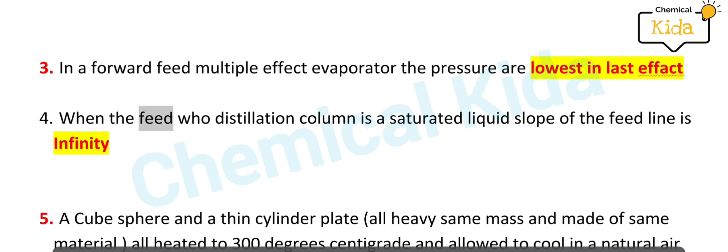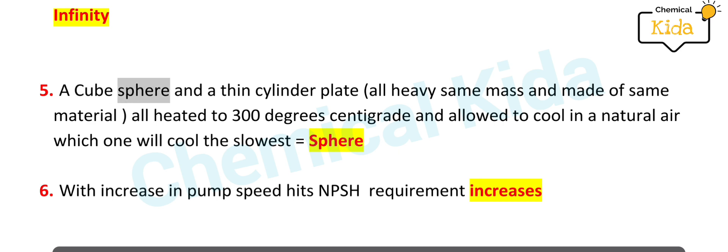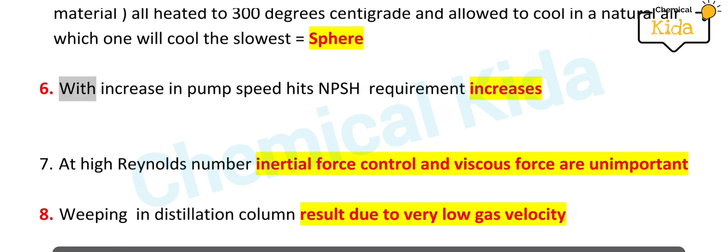When the feed to distillation column is a saturated liquid, slope of the feed line is infinity. A cube, sphere, and a thin cylinder plate, all having same mass and made of same material, all heated to 300 degrees centigrade and allowed to cool in natural air, which one will cool the slowest is sphere. With increase in pump speed, its NPSH requirement increases.